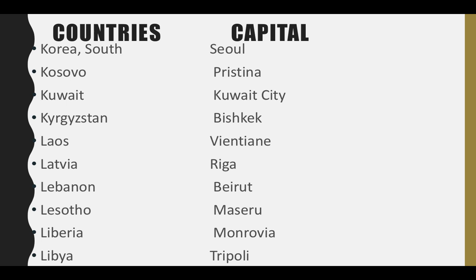South Korea — its capital is Seoul. Kosovo — its capital is Pristina. Kuwait — its capital is Kuwait City. Kyrgyzstan — its capital is Bishkek. Laos — its capital is Vientiane. Latvia — its capital is Riga. Lebanon — its capital is Beirut. Lesotho — its capital is Maseru. Liberia — its capital is Monrovia. Libya — its capital is Tripoli. Thank you so much friends, this is the next set of countries and their capitals. With part 3, we will come tomorrow.